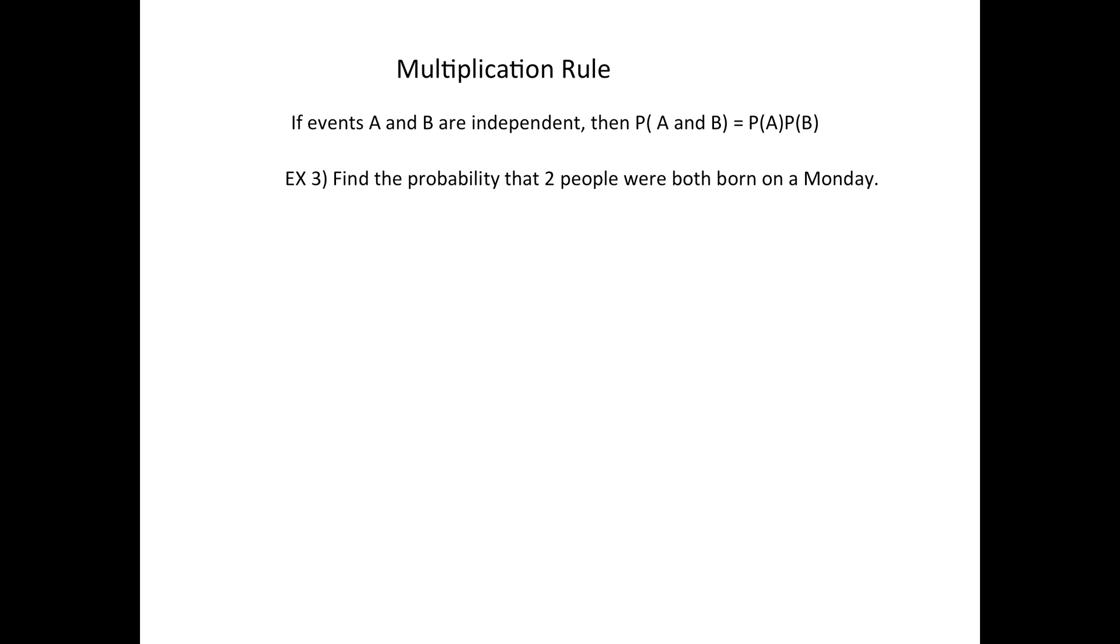So here's another example, find the probability two people randomly chosen were both born on a Monday. So that means you're looking for the probability of a Monday and a Monday. Again, these are independent.